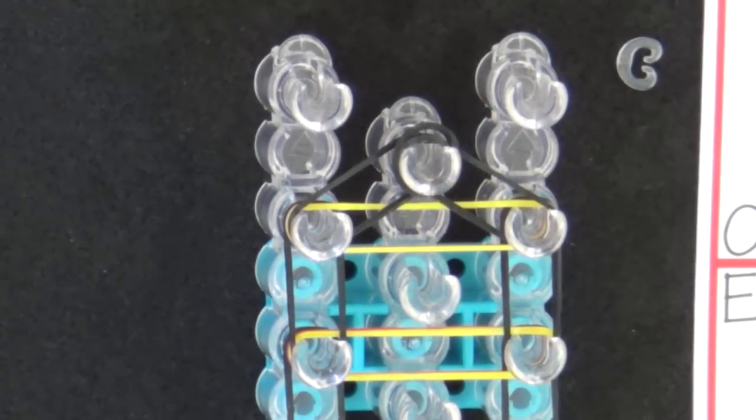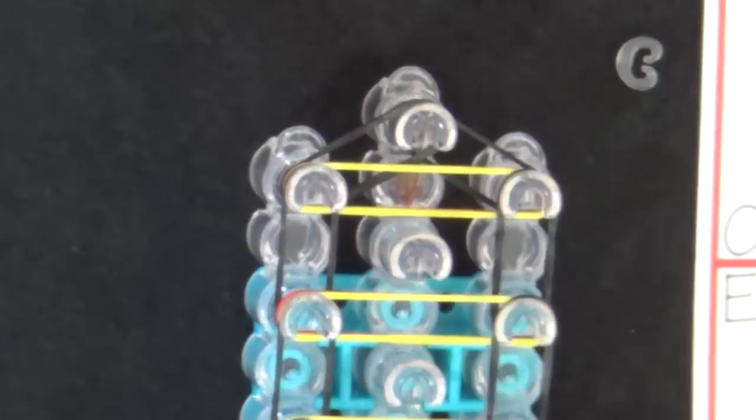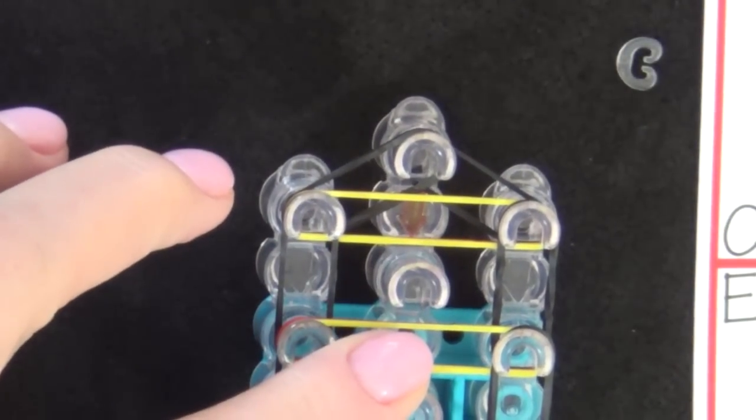Now, after all the bands are placed on the loom, you're ready to start looping. You'll turn your loom around, and the red arrow will be pointing toward you.